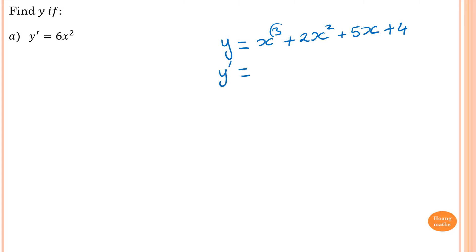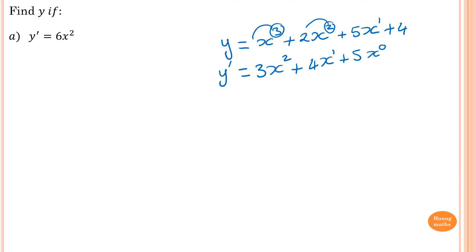y' equals — bring down the 3, so 3x squared. Bring down the 2, so 2 times 2 is 4x to the power 1. Then bring down 1 times 5 is 5, and x to the power 0 is 1, so just 5. Differentiating the constant 4 gives 0.